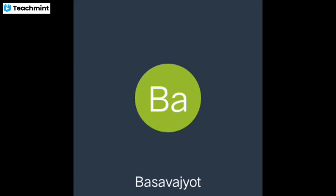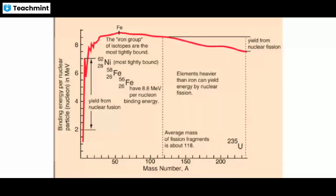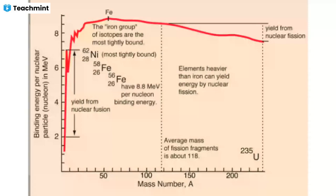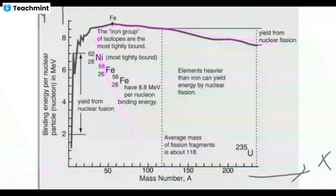Now let us observe the binding energy curve. Along the x-axis, the mass number is taken, and along the y-axis, the binding energy per nucleon is taken. So binding energy per nucleon is along the y-axis and mass number is along the x-axis.